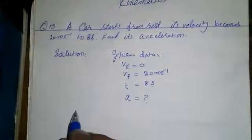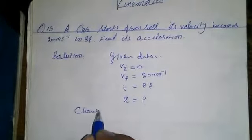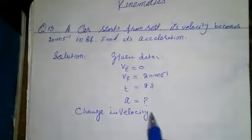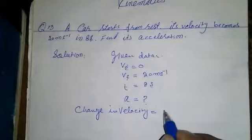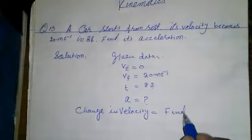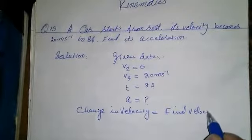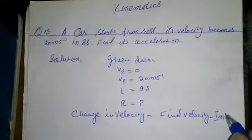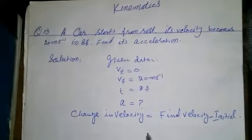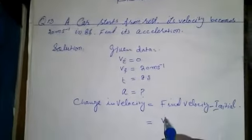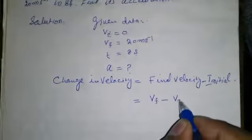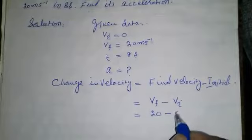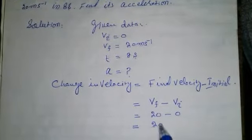Now the change in velocity is equal to final velocity minus initial velocity. Vf minus Vi, which is equal to 20 minus 0, which equals 20.